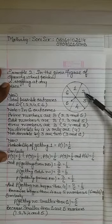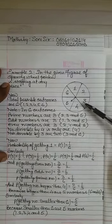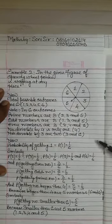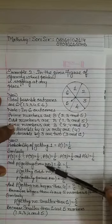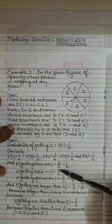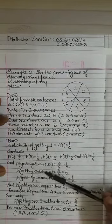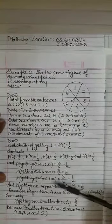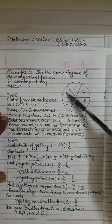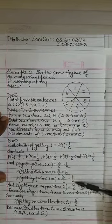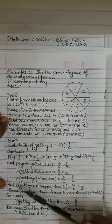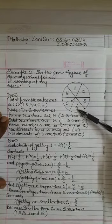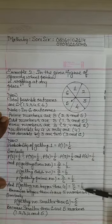Probability of getting one is one by six; probability of two, three, four, five, and six are also each one by six. Probability of even numbers: three even numbers out of six, so three by six equals one by two. Probability of odd numbers: three odd numbers out of six, so three by six. Probability of prime numbers: three prime numbers out of six, so three by six equals one upon two.